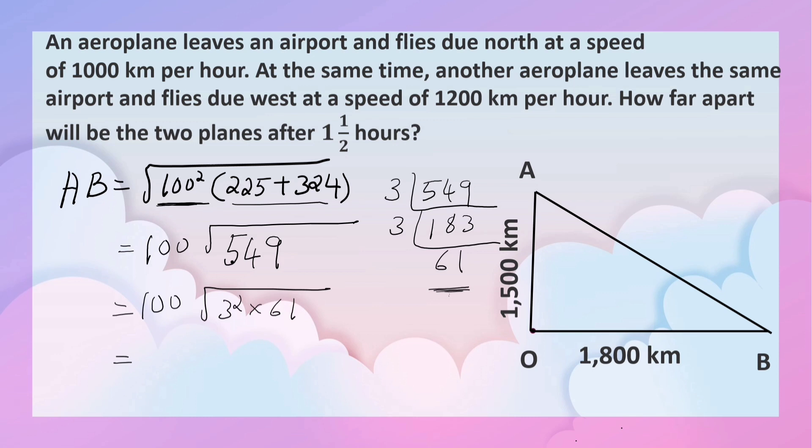If you take the square root of 3 square, it is 3, into root of 61. That is equal to 300 root 61 kilometers.